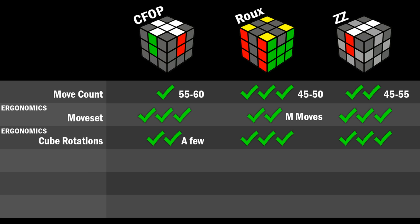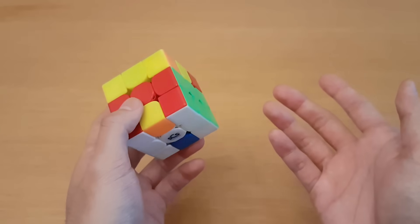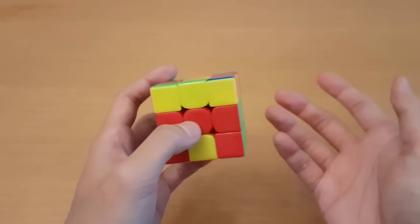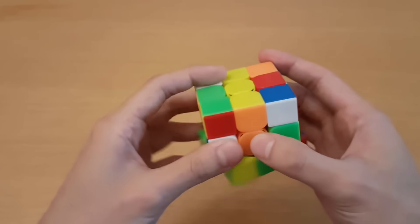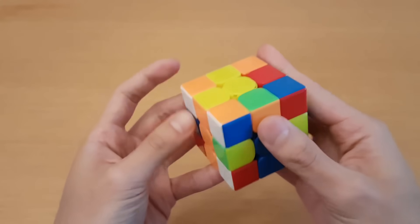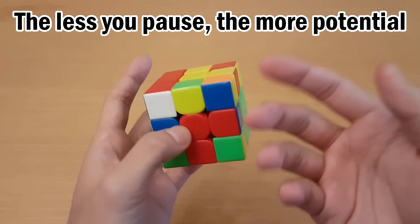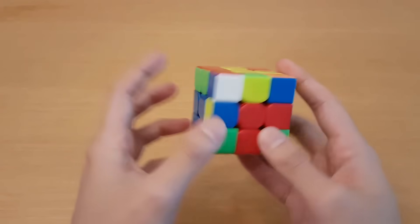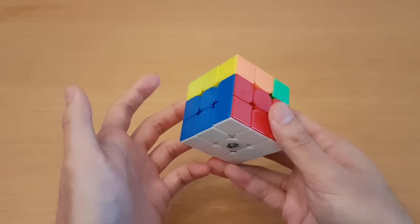Maybe ZZ could even be the best. But the thing we're overlooking for why CFOP is so good is because of re-grips and lookahead. Move counts and ergonomics are important but none of that matters if you keep pausing. The less you pause the more of the potential you hit with this method. So if we're in an instance like this right now I can already see all the pieces I have left to solve, and then I can go through the rest of it without pausing.